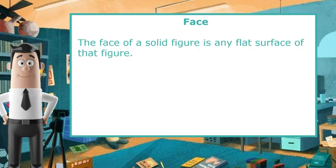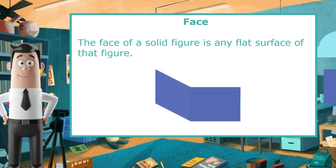The face of a solid figure is any flat surface of that figure. Watch as I take these rectangular faces and put them together. They come together to make a rectangular prism, which is a big old box. Each side of our box is called a face.